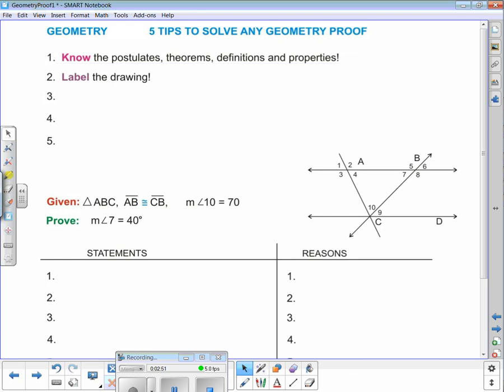Tip number two: label the drawing. So here we are given triangle ABC. We're told that AB is congruent to CB. So I'm going to label that - those two lines are congruent. I'm also told that the measure of angle 10 is 70 degrees, so I'm going to stick 70 degrees in there. Did some labeling. It's always important. It's a visual. It's going to help you visualize where you're going and what's going on.